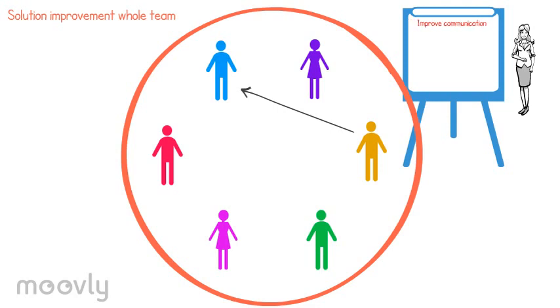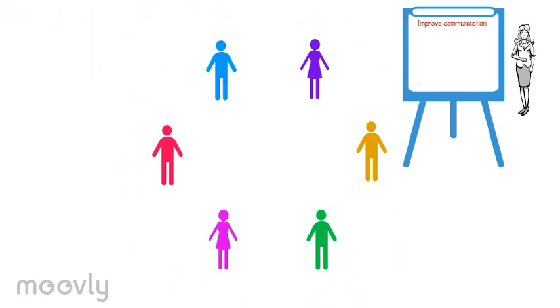The participant shares his suggestion. To improve our communication we should focus more consciously on what the other person is saying. We could do this by planning a meeting every Monday morning. The trainer writes down the suggestion on the whiteboard below the point of improvement.